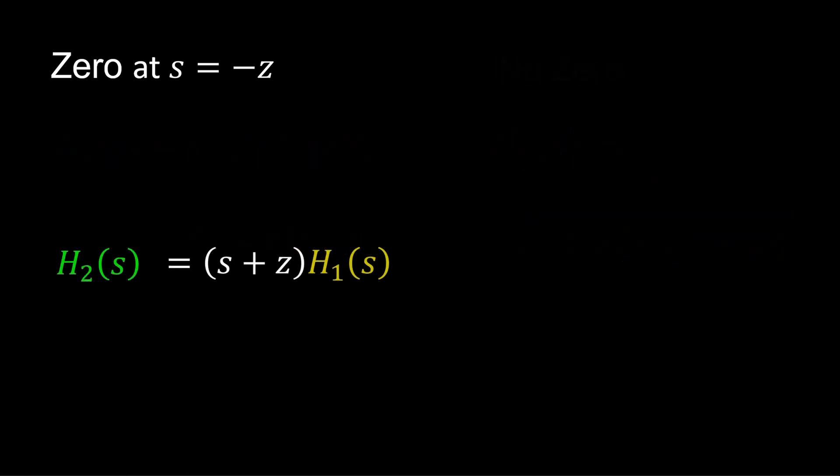H1 transforms the input U to its output Y. The zero at S equals minus Z transforms the output of H1 through the transfer function S plus Z. The transfer function product is H2, the single zero transfer function. Or, the H2 output Y2 over the input signal U.